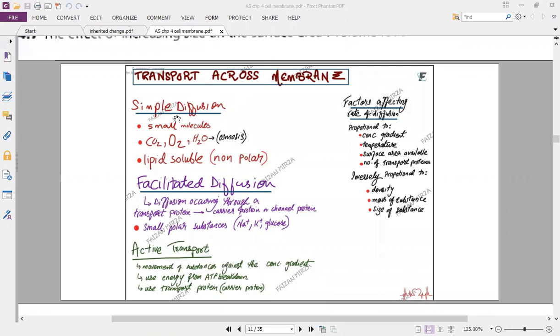What's simple diffusion? Whenever the term diffusion comes, it basically is the movement of molecules down the gradient from high concentration to low concentration. Simple diffusion involves small molecules, for example, carbon dioxide, oxygen, water. Water specifically can move by osmosis, but carbon dioxide and oxygen can move by simple diffusion.